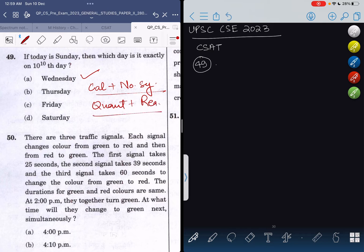The question is: if today is Sunday, which day is it exactly on 10^10th day? Let's forget about the question for a moment. If I ask you, if today is Sunday, which day will be after two days?